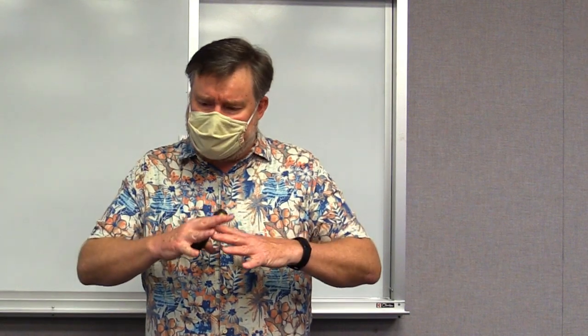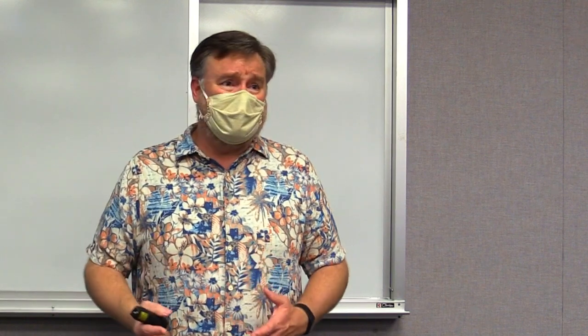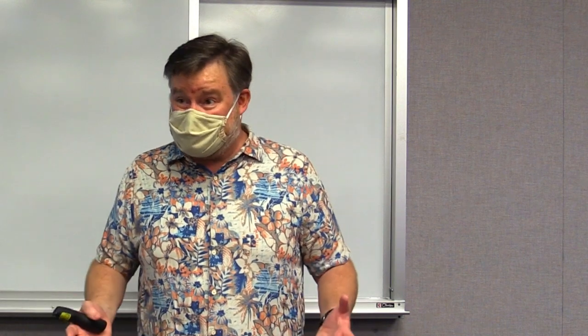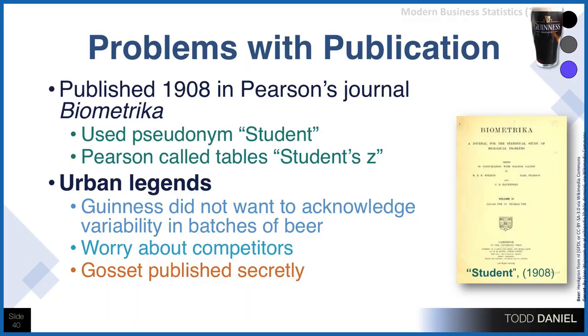He wanted to publish this and went to Guinness to ask for permission, and they initially turned him down. There had been some previous disagreement with publications, so Guinness had issued a blanket refusal for their brewers or scientists to publish. However, Gossett pointed out that the benefit of these tables wasn't something that would help the competition — it was useful for other statisticians. So Guinness made an exception, with the stipulation that he had to publish under a pseudonym. He chose the pseudonym 'Student,' which is why we use Student's t-tables. The publication appeared in the journal Biometrica in 1908, originally called Student's z-distribution.